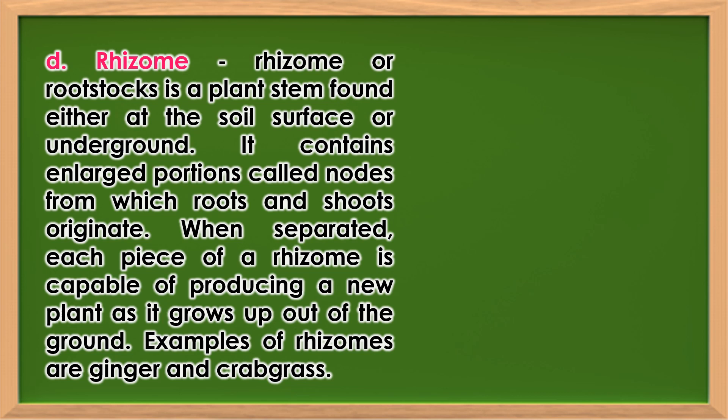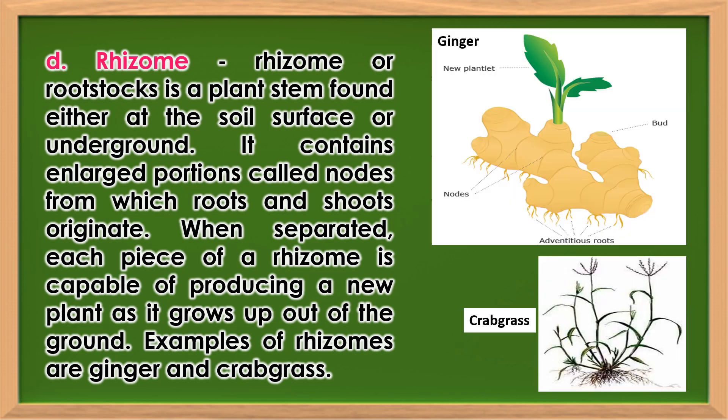Rhizome: A rhizome or root stock is a plant stem found either at the soil surface or underground. It contains enlarged portions called nodes from which roots and shoots originate. When separated, each piece of a rhizome is capable of producing a new plant as it grows up out of the ground. Examples of rhizomes are ginger and crabgrass.